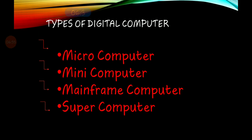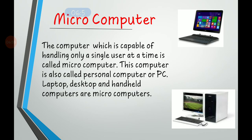On the basis of size and capacity, types of digital computers are: microcomputer, minicomputer, mainframe computer, and supercomputer. A microcomputer is capable of handling only a single user at a time and is also called a personal computer or PC. Laptops, desktops, and handheld computers are microcomputers — the computers we use at home or in offices.